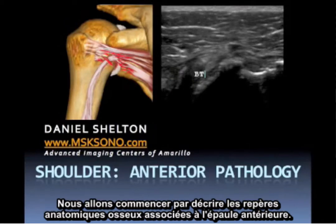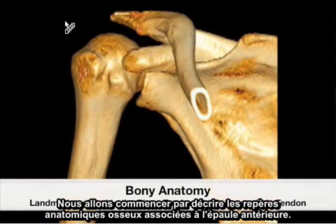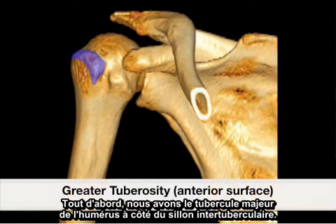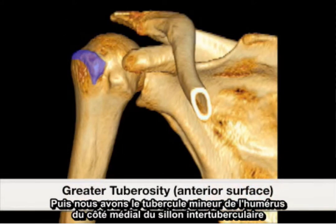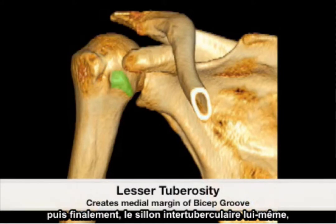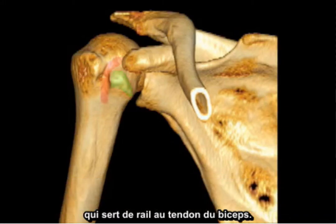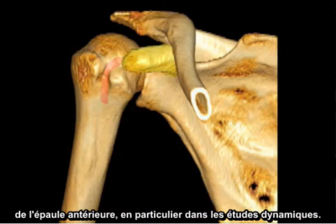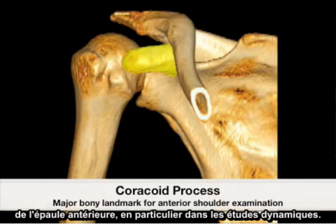We'll begin by describing the bony anatomical landmarks associated with the anterior shoulder. First, we have the greater tuberosity located lateral to the bicipital groove. Next, we have the lesser tuberosity located medial to the bicipital groove. And finally, we have the bicipital groove itself, which is a tract for the bicep tendon. A major bony landmark associated with the anterior shoulder, especially in dynamic studies, is the coracoid process.